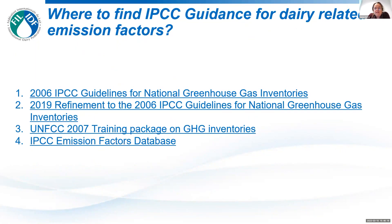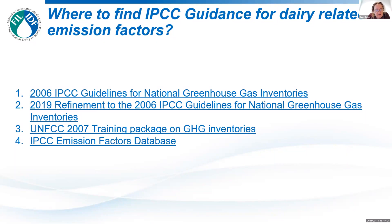Where can you find emission factors related to dairy? There are four reports: the 2006 IPCC guidelines for national GHG inventories, which was refined in 2019 — you need both reports to make your estimations. There's also the UNFCCC 2007 training package on GHG inventories, which is really useful, and the IPCC emission factors database, where you can find fuel date emission factors. Links to all of these are in the slides and in the guide.